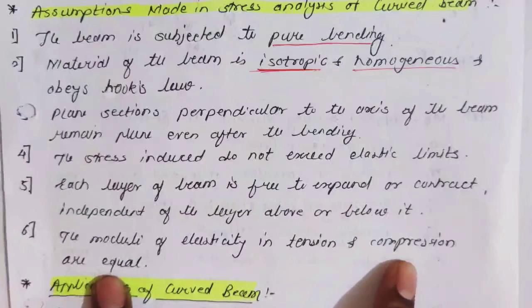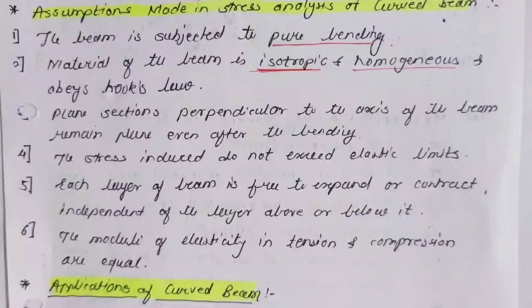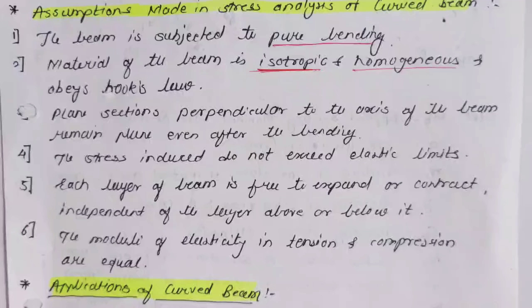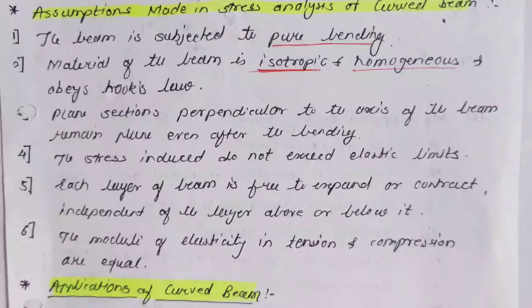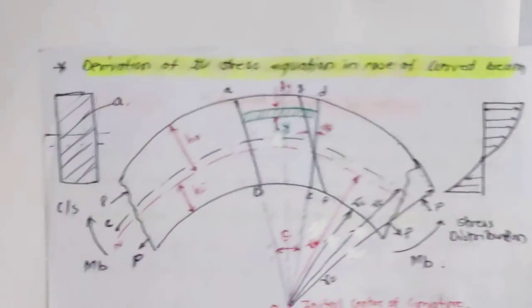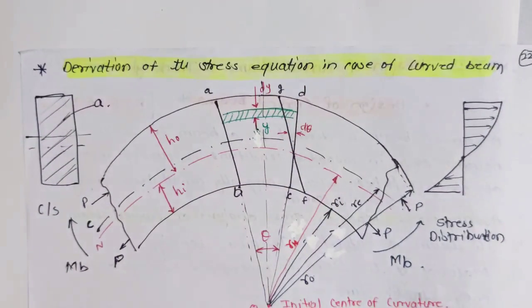The last assumption is that the modulus of elasticity in tension and compression are equal. The modulus of elasticity E, bulk modulus, and modulus of rigidity G are the same in tension and compression. With these assumptions covered, we will now move to the next part, which is the derivation of the stress equation in the case of a curved beam.